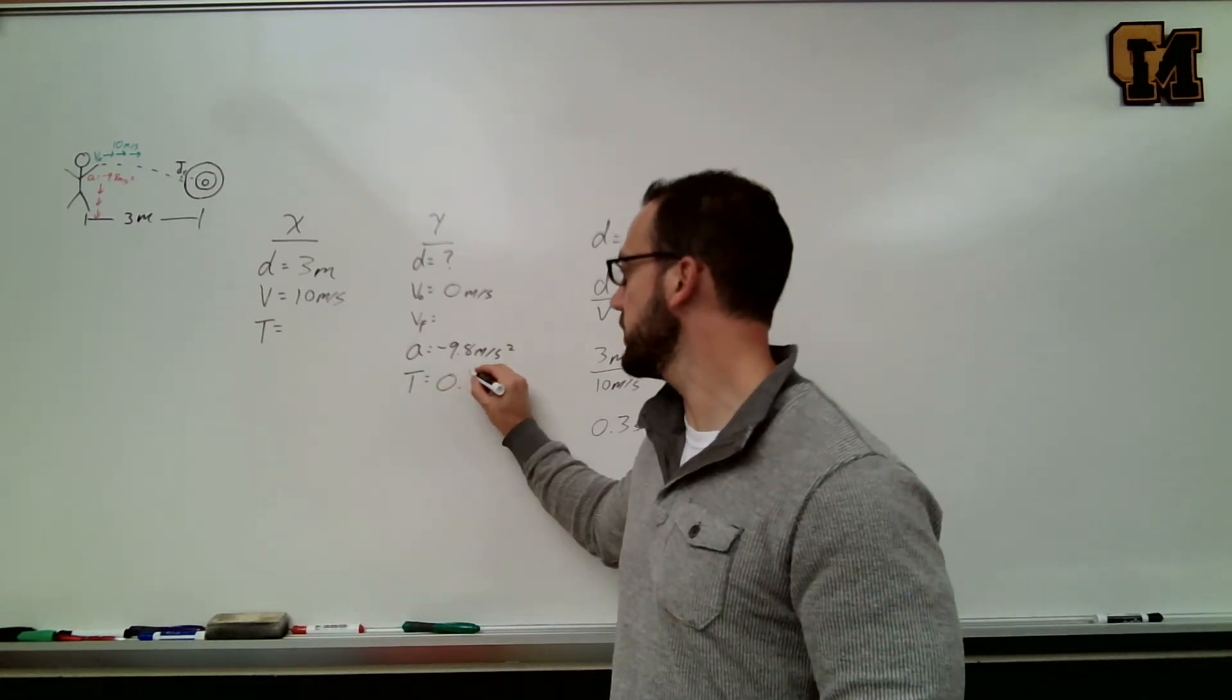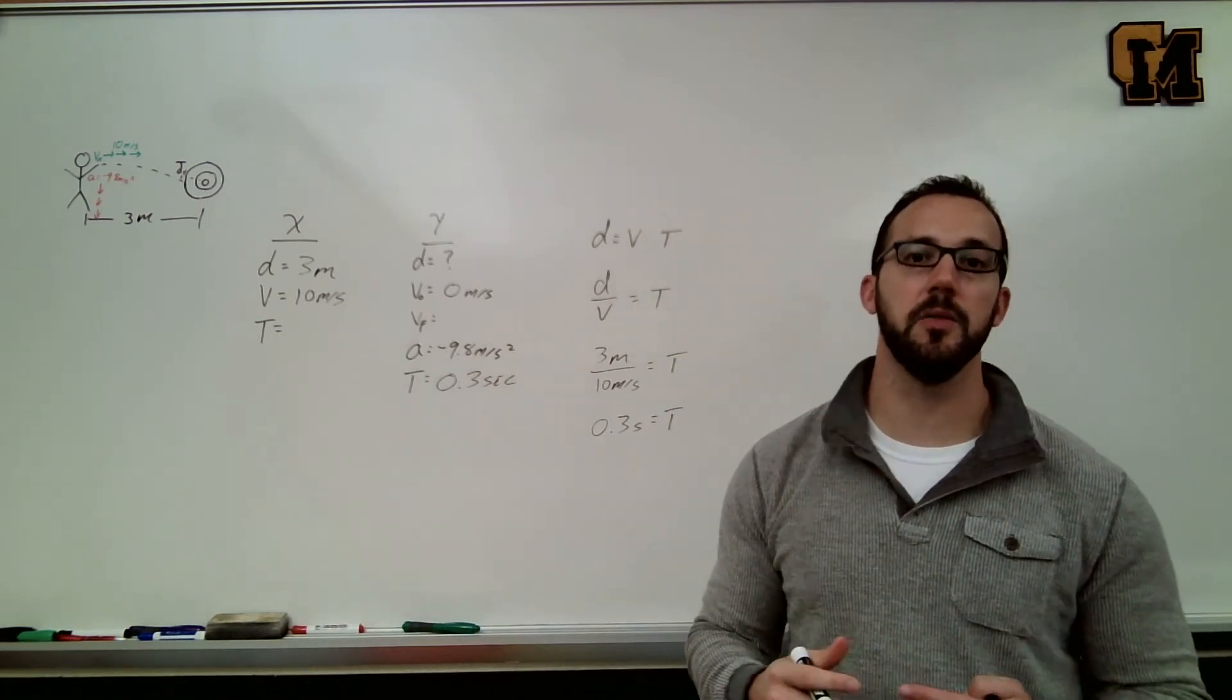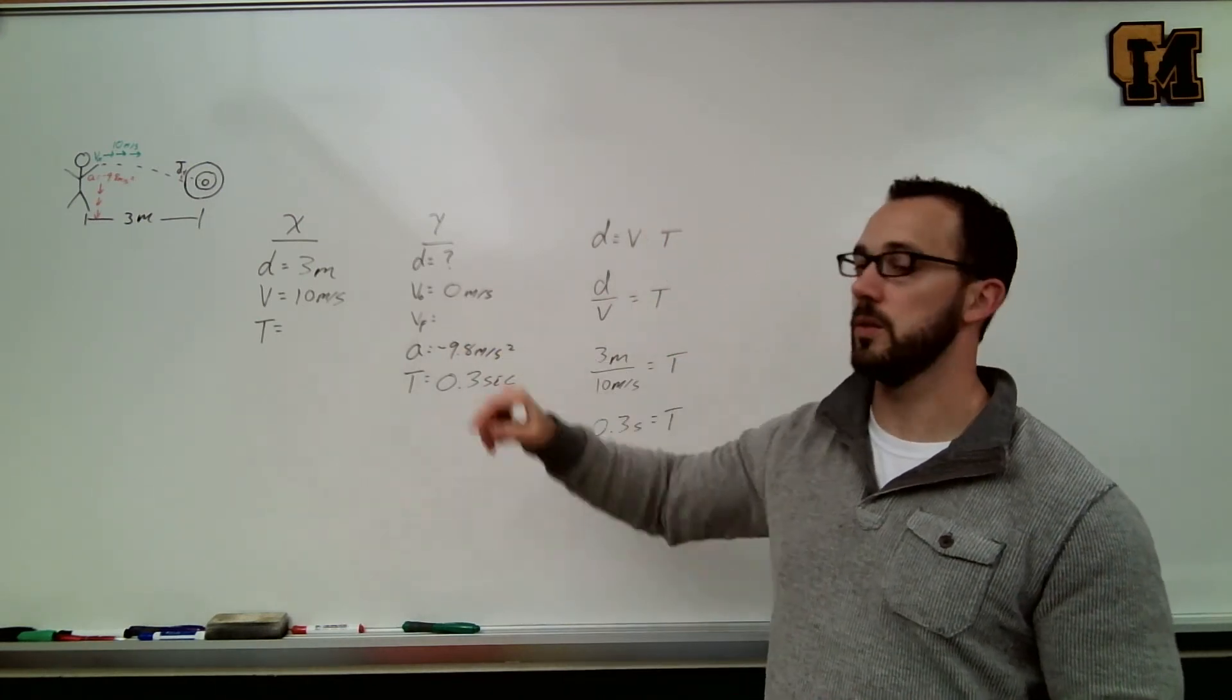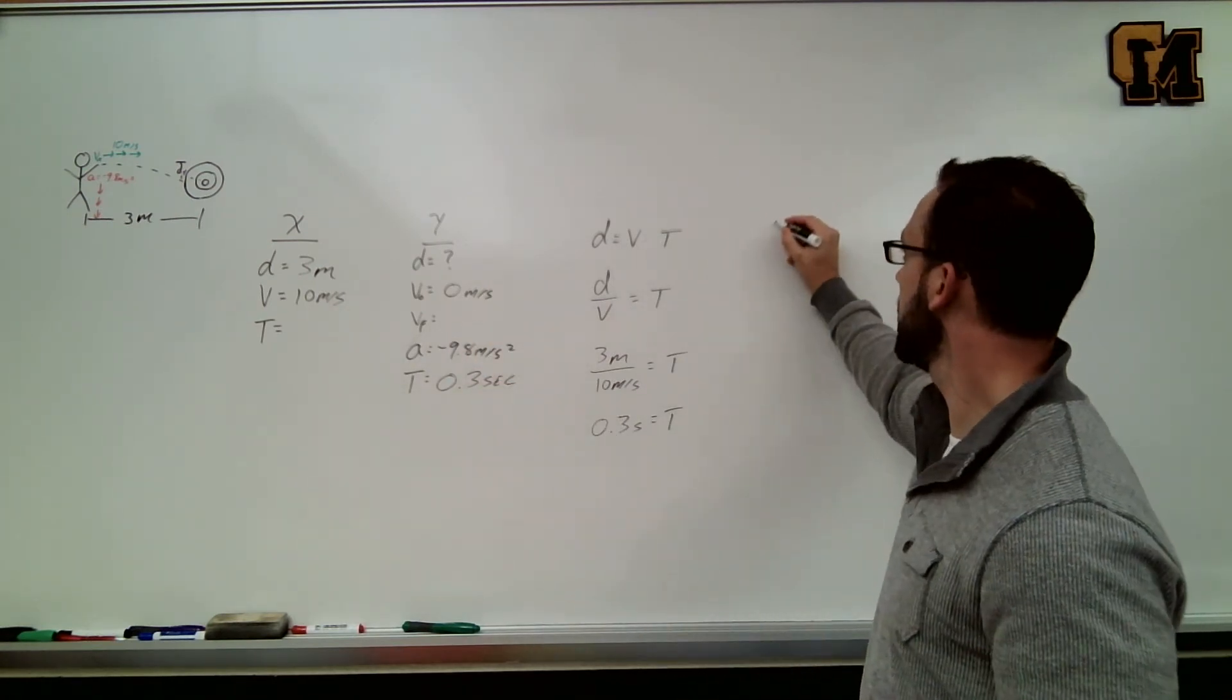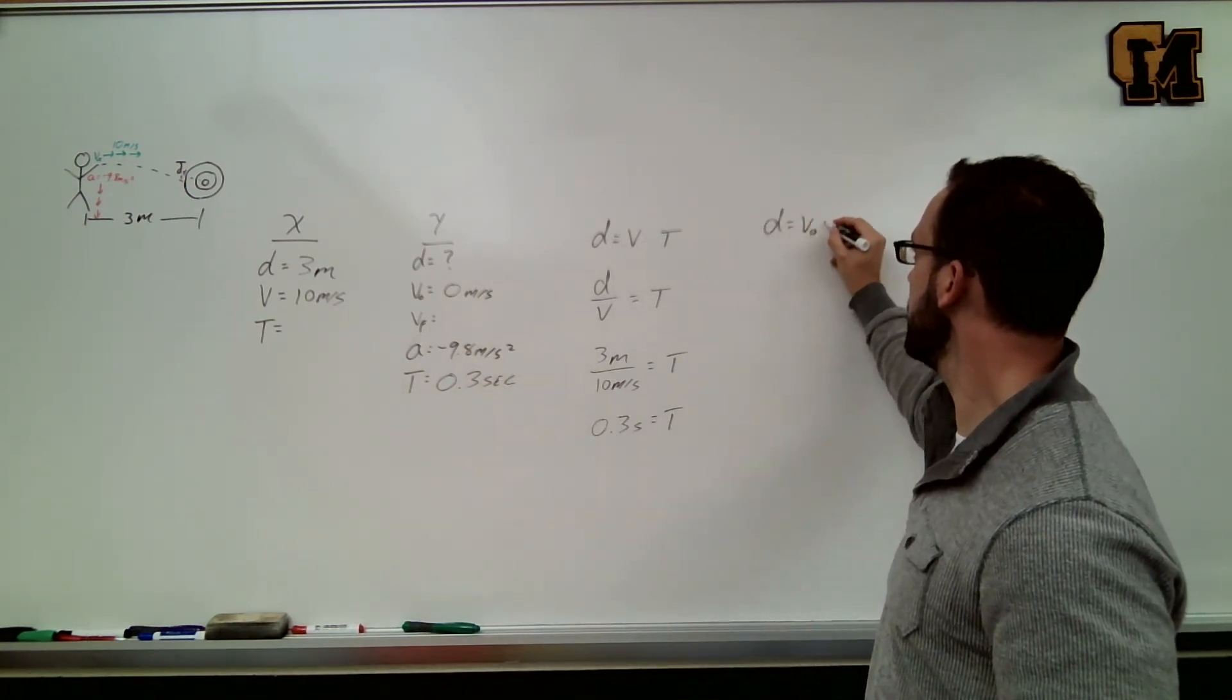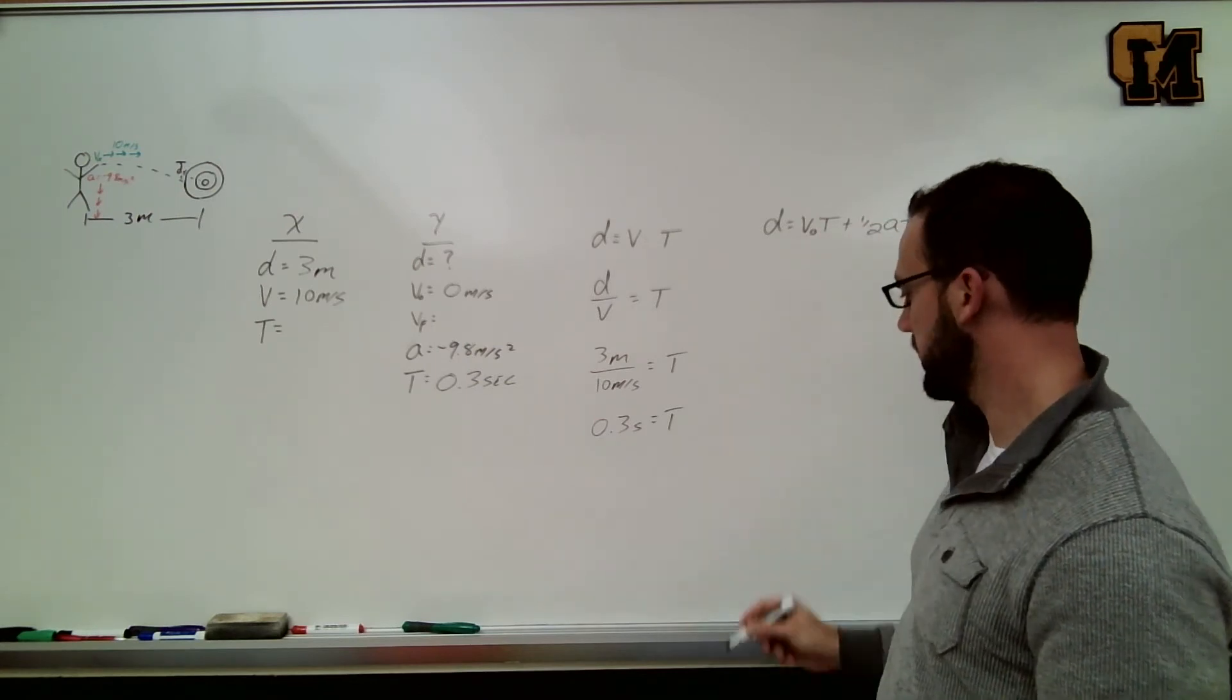So now I have three numbers here in the y and that's enough information to solve for the drop. I'm going to pick the equation that does not have vf in it. That's the d equals v naught t plus 1 half a t squared equation.